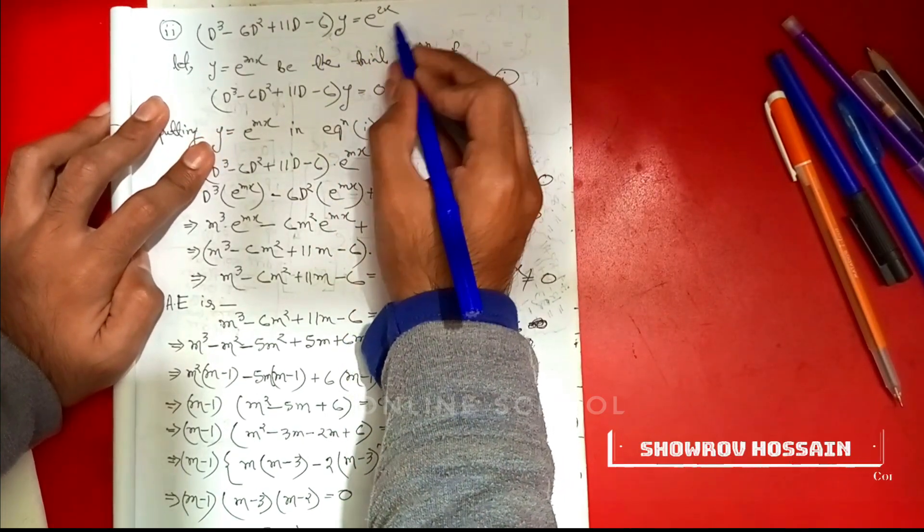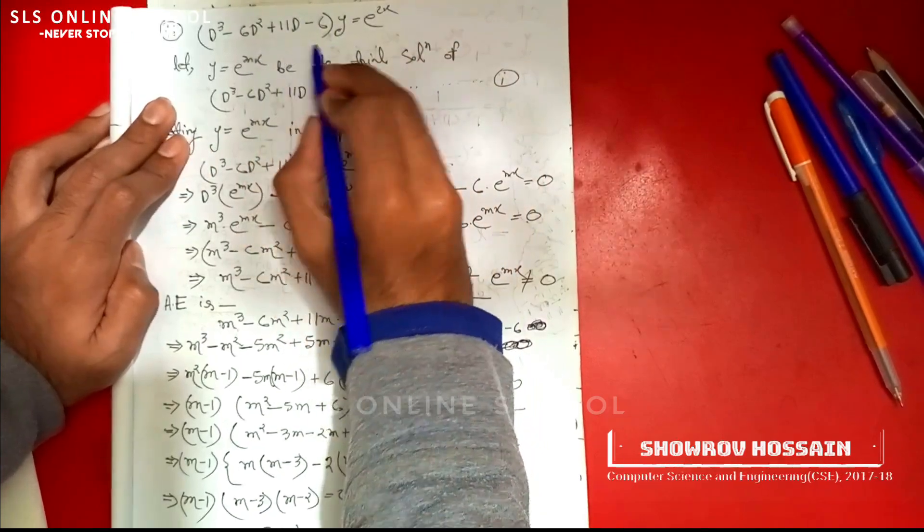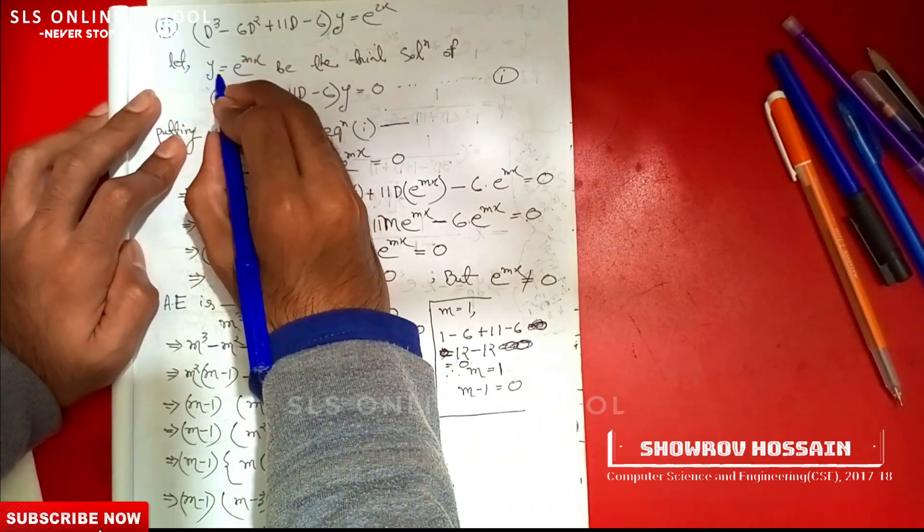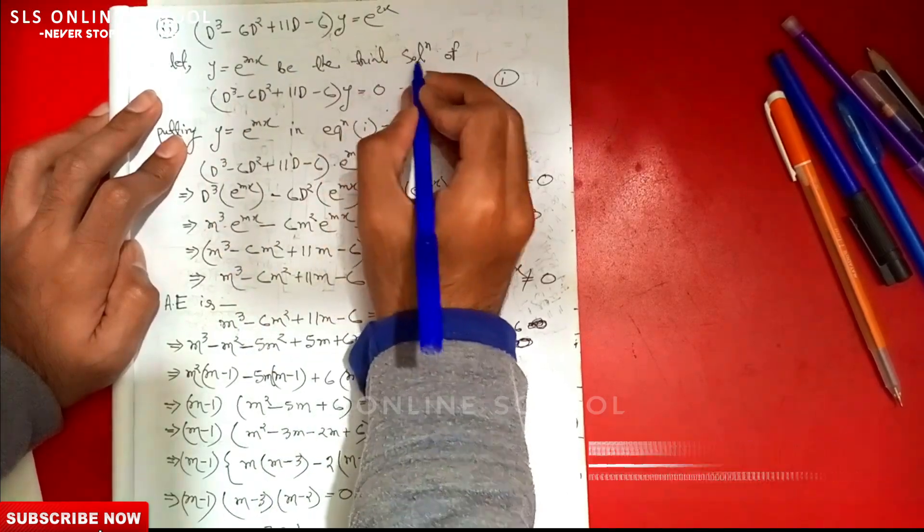This is a non-homogeneous linear equation, so we solve it as usual with a trial solution. Let y = e^(mx) be the trial solution of the homogeneous form equal to zero.